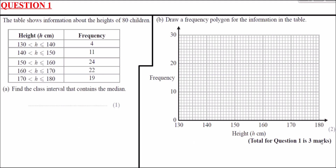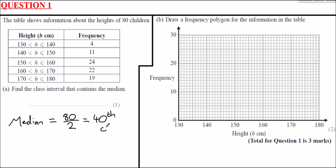Question 1: we've got a table showing information about the heights of 80 children, and we need to find the class interval that contains the median. The median is essentially just the middle value — imagine the children stood in order of height from smallest to tallest. The median would be the one stood in the middle out of 80, so halfway: 80 divided by 2. The median child will be around the 40th child.